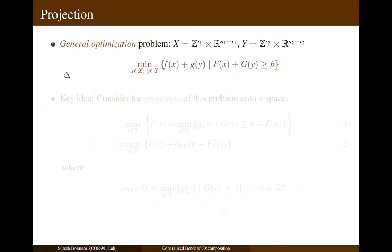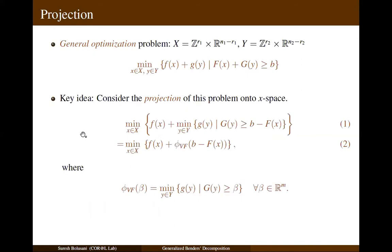Consider this general optimization problem with first stage variables x, second stage variables y, and additively separable objective and constraint functions. The key idea of this framework is to consider the projection of this problem onto the space of first stage variables. This decomposes the original problem into two stages as mentioned in equation 1. By replacing the second stage problem with a function phi_Vf, we obtain an equivalent reformulation, equation 2.